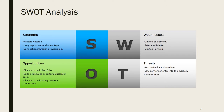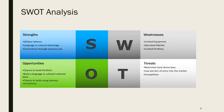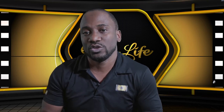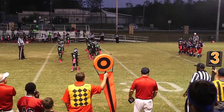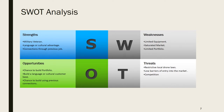Part of the market analysis includes a SWOT analysis. SWOT is an acronym for Strengths, Weaknesses, Opportunities, and Threats. For strengths, you want to specify what you know that will help you succeed — for example, being a military veteran, speaking a second language, having a cultural advantage, or having previous connections like being a former high school football coach if you're getting into sports videography.